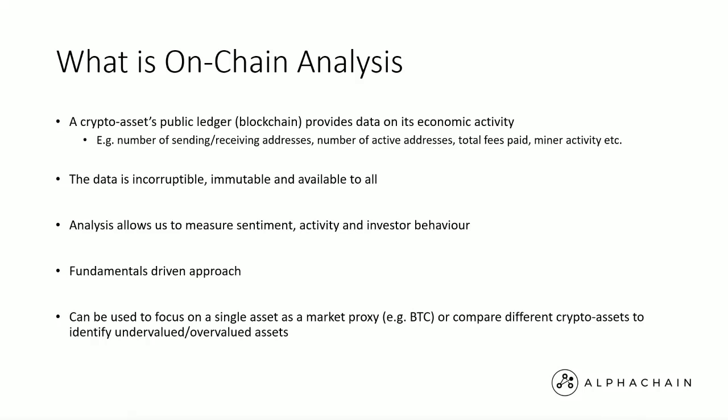The good thing about on-chain data is that it's incorruptible, immutable, and easily accessible. The data on-chain will not be revised and cannot be edited back in time. Whatever is on the chain will be there forever and cannot be changed — so this is data we can trust, knowing exactly what happened in the past with no risk of it being changed by anyone at a later point. This analysis of on-chain metrics allows us to measure sentiment, the activity of investors, and also their behavior.